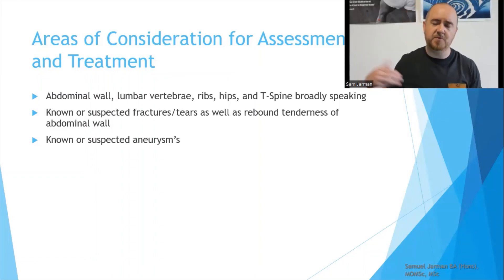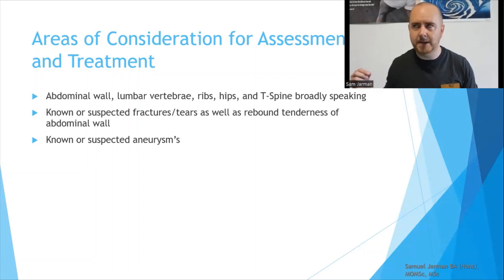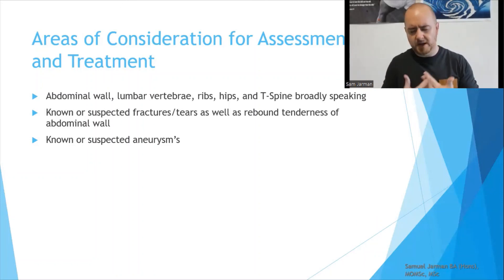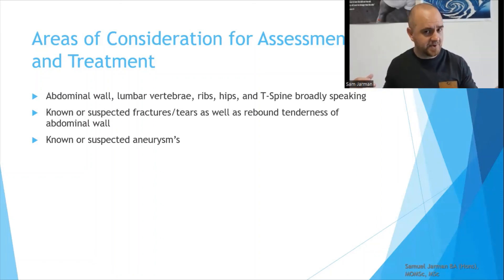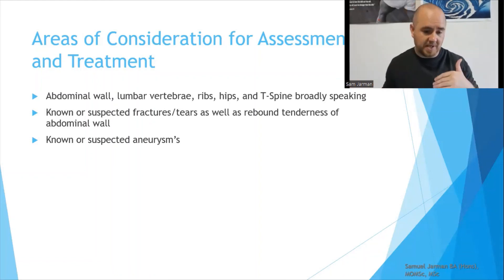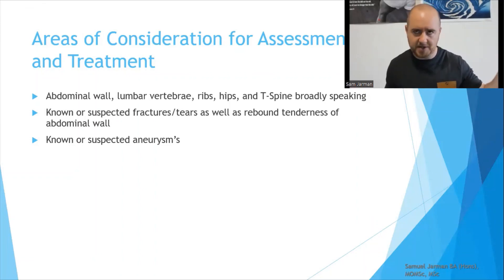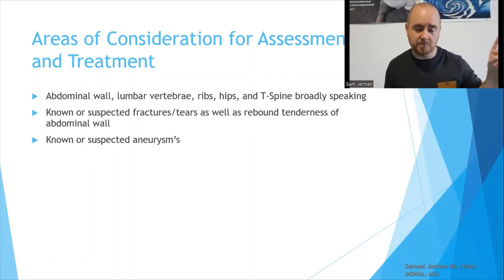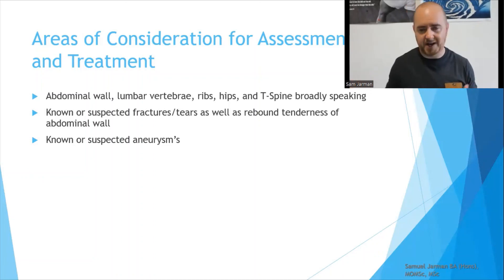Known or suspected aneurysms — as we've noted many times, abdominal aortic aneurysms are easier to identify from the outside without imaging, whereas thoracic abdominal aneurysms are much more difficult to identify externally. There may be reported symptoms the patient presents, but these should be diagnosed by a medical physician. Known tears or fractures: don't treat. Suspected tears or fractures: refer out. Rebound tenderness: refer out. Suspected aneurysms: refer out. Known aneurysms: don't treat the area. That is the concept of pelvic flexion.